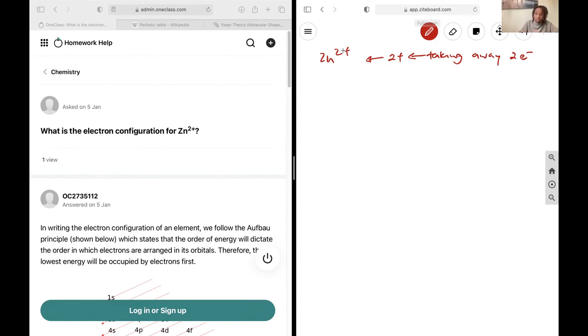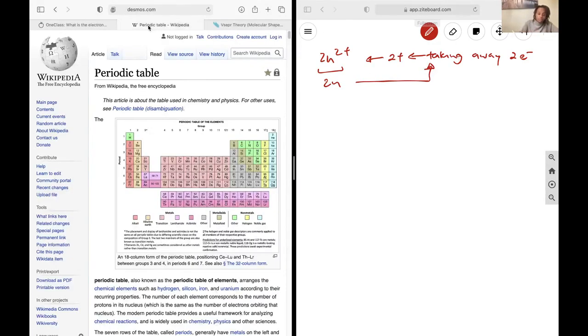So the charge makes complete sense. To find the electron configuration for this ion, I need to first find the electron configuration for zinc, and then I just account for this fact by taking away the two highest energy electrons. So I look at the periodic table for the electron configuration of zinc.